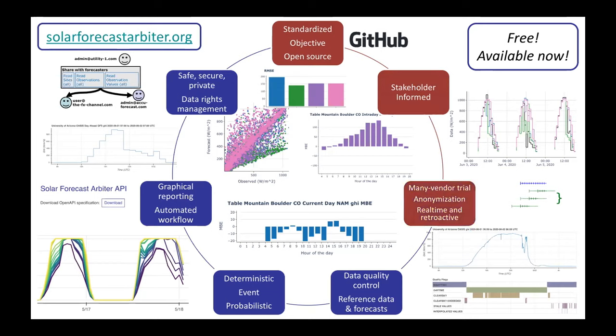A big item was the ability to perform multi-vendor trials with anonymization where necessary. Users also wanted to conduct analysis on an ongoing basis to assess their providers and their in-house forecasts, and also have the capability to do retroactive analysis of forecast improvements resulting from research advances. The analysis is only as good as the quality of the ground truth data used, and only useful in the context of reference forecasts. The system therefore incorporates the capability to quality control the data uploaded to it and to provide reference forecasts. Reference data sites provide an easy way to test forecasts against public ground truth data. The arbiter manages all of these use cases for deterministic forecasts, generic event forecasts, and probabilistic forecasts.